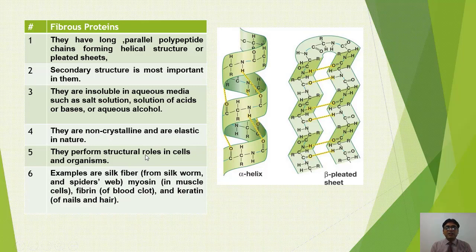क्योंकि fibrous proteins water में insoluble हैं, इसलिए हमारे cells और organisms के structures जो हैं वो fibrous proteins से बने होते हैं। Examples fibrous proteins की: silk fiber जो silkworm release करता है, spider's web, myosin जो हमारे muscle cells में होती है, fibrinogen जो blood clot बनाता है, और keratin जो हमारे nails और hairs में present होती है - ये सब fibrous proteins की examples हैं।